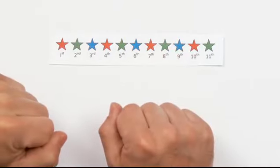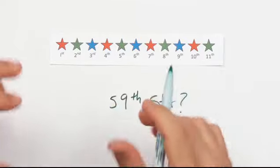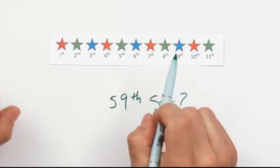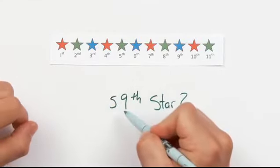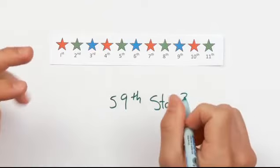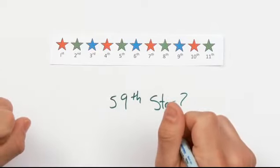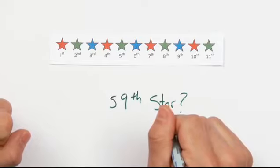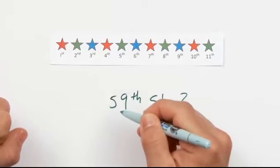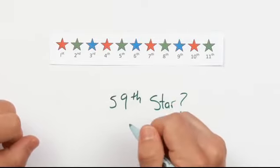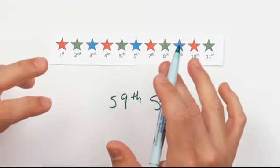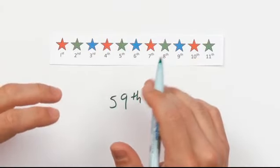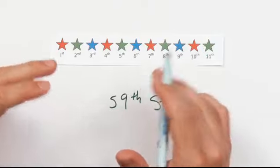What color would the 59th star be? Well, I start by finding the closest multiple of 3 to 59. 60 is a multiple of 3, because it's 3 times 20. Since 59 is 1 less than 60, and I know the position of any green star is always 1 less than a multiple of 3, then the 59th star must be green.